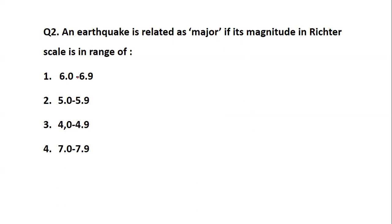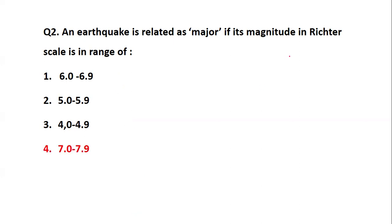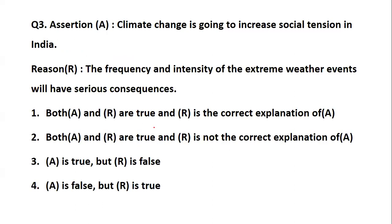An earthquake is classified as 'major' on the Richter scale in the range of what? The options given are: 6.0–6.9, 5.0–5.9, 4.0–4.9, and 7.0–7.9. A major earthquake is in the range of 7.0 to 7.9. Questions on earthquake measurement and the sensitivity of the Richter scale do come in the exam, so you should be very clear with these concepts. I'll be providing a table that will help you understand any factual earthquake question.